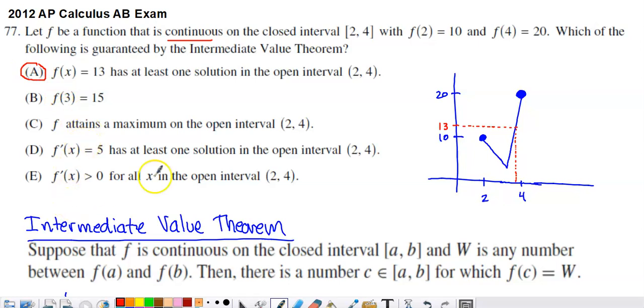Some of the other options, this one here, f attains a maximum on the open interval 2 to 4. That's what the extreme value theorem is going to guarantee. And actually, I shouldn't say that because it would have to be the closed interval from 2 to 4. The extreme value theorem applies to a closed interval. But that's something that you've seen in that theorem, not the one that we are asked about in this particular problem.